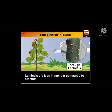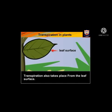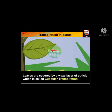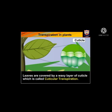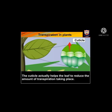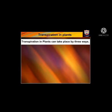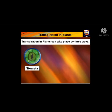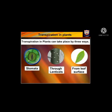Transpiration is also done through the lenticels, which are minute openings on the stem. Lenticels are fewer in number compared to stomata. Transpiration also takes place from the leaf surface. Leaves are covered by a waxy layer called the cuticle, which is called cuticular transpiration. The cuticle helps the leaf reduce the amount of transpiration. So transpiration in plants can take place by three ways: through stomata, through lenticels, and from the leaf surface.